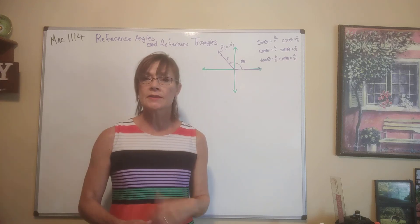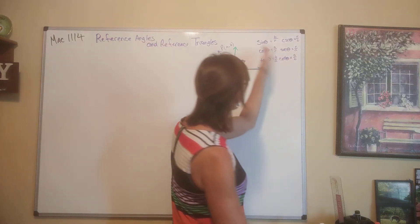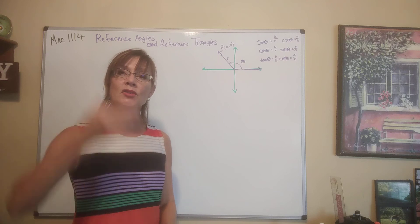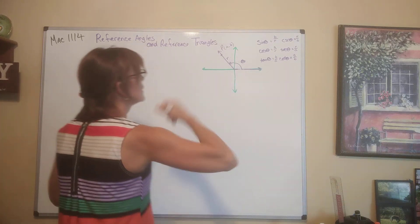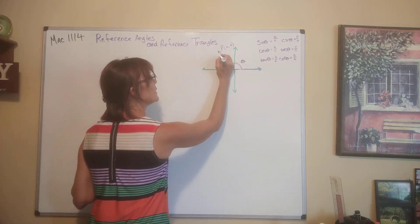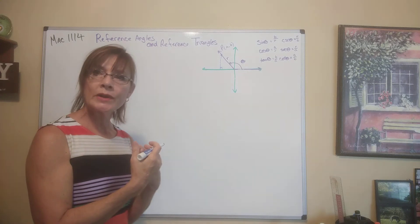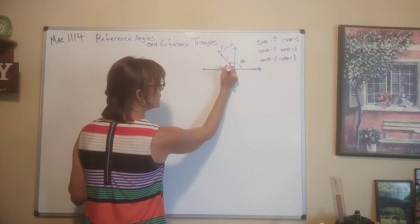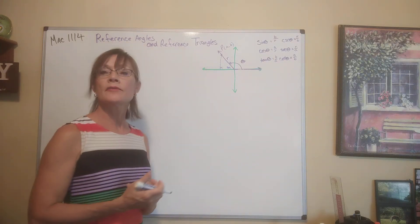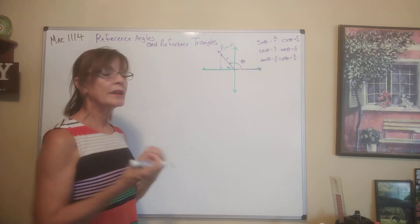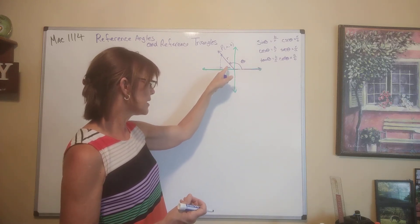Today we're going to look at how to define the six trig functions using reference angles. A reference angle is where you draw an angle in standard position, then drop an altitude — a horizontal line down to meet the x-axis at a right angle. There's another angle in here called alpha, and this little alpha is the reference angle. This is known as the reference triangle.